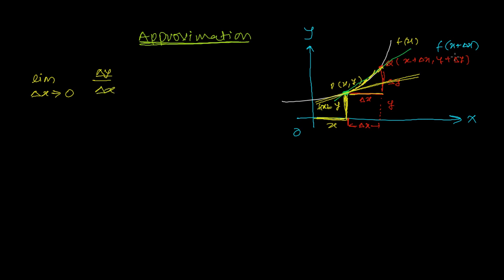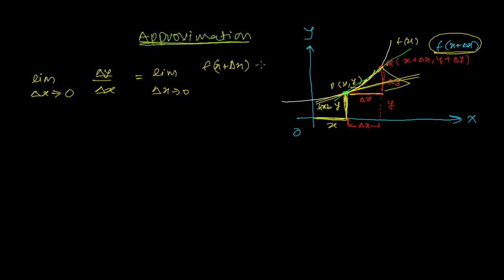The limit as delta x tends to zero of delta y over delta x — where delta y is actually y2 minus y1, that is f of x plus delta x minus f of x — divided by delta x, gives us dy over dx. This is the derivative, and sometimes we write it as f prime of x also. That's the same thing.